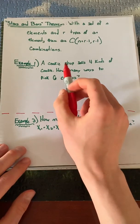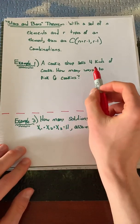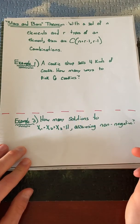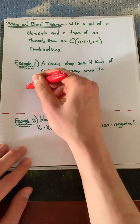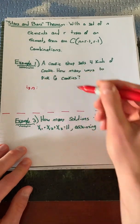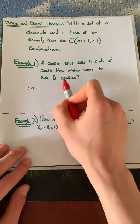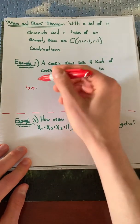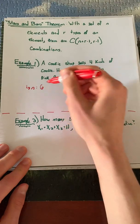Our first example: a cookie shop sells four kinds of cookies. How many ways are there to pick six cookies? First let's find our variables. For n, we see we're trying to pick six cookies, so we have a set of six elements. So n is six.